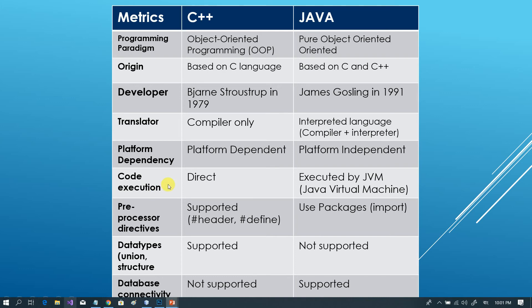The next topic is code execution. In C++, code is executed directly. But in Java, the execution process involves the Java Virtual Machine, which is very important. Java code is compiled into human-readable bytecode, then the JVM interprets it into machine code.